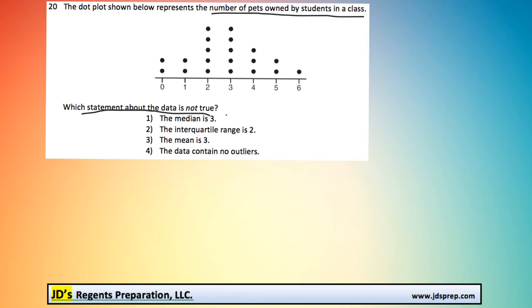And so we're dealing with median, interquartile range, mean, and outliers. So I can tell right away the way this dot plot is shown is a bit difficult to see. And if we're going to be trying to calculate these different things, it would really help to have a list of the data instead. So the first thing we should do is write out this list of numbers.